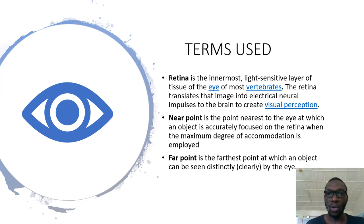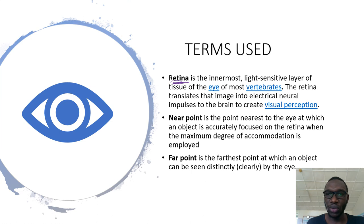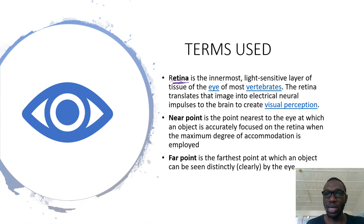Now let's look at the terms used in this topic. The first one is the retina. The retina is the innermost light-sensitive layer of the tissue of the eye. What the retina does is to change the light energy into electrical impulses that are sent to the brain for interpretation. If light comes from a tree, it will fall on your eye and your lens will converge it to the retina. The most important thing to note is that the image should always be formed at the retina.